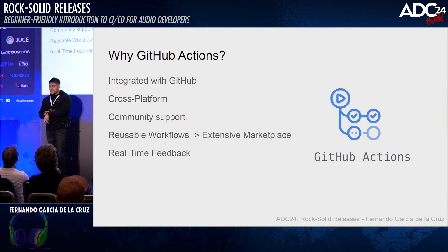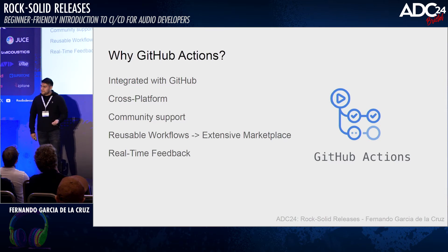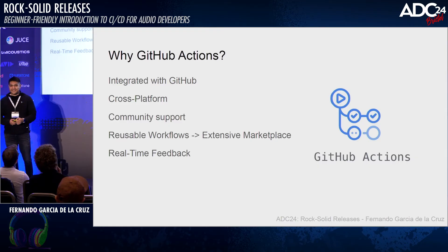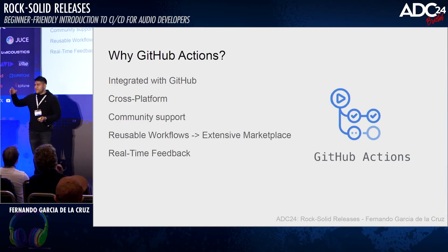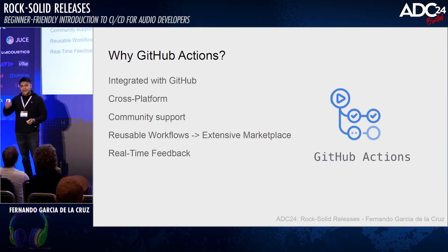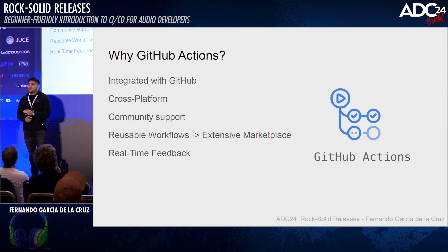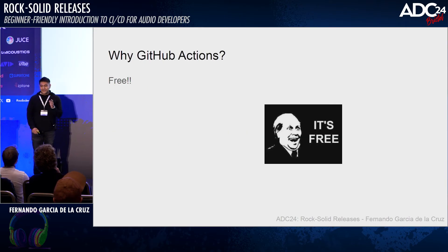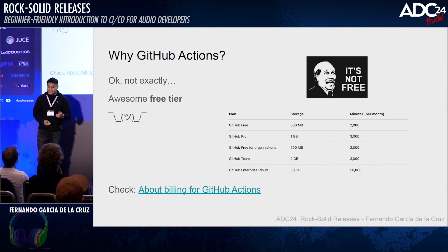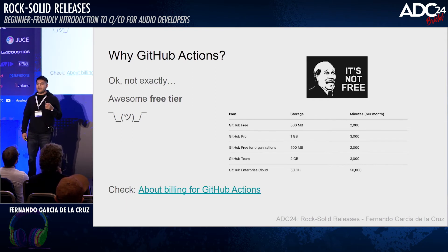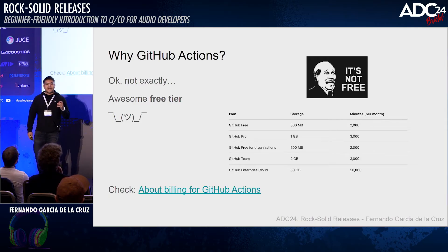Why do we use GitHub Actions? It has a lot of great advantages. It's well integrated with GitHub, which is a site you might already be familiar with. It is a cloud platform — you can basically borrow Microsoft computing power. You can borrow a runner that runs on Linux, Mac, and Windows. It has a lot of great community support. And most importantly, it is free — well, it has an awesome free tier that you can use, with a limited amount of computing minutes and storage.